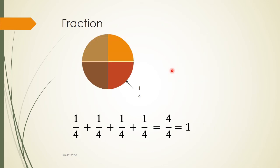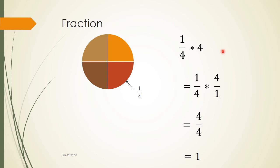Eight over eight is actually equal to one, which is basically one whole piece. If we take the same idea and apply it to another pie cut into four pieces, where one piece is one quarter or one over four, then one, two, three, four — that gives us four over four, which is also equal to one, because this is one whole piece.